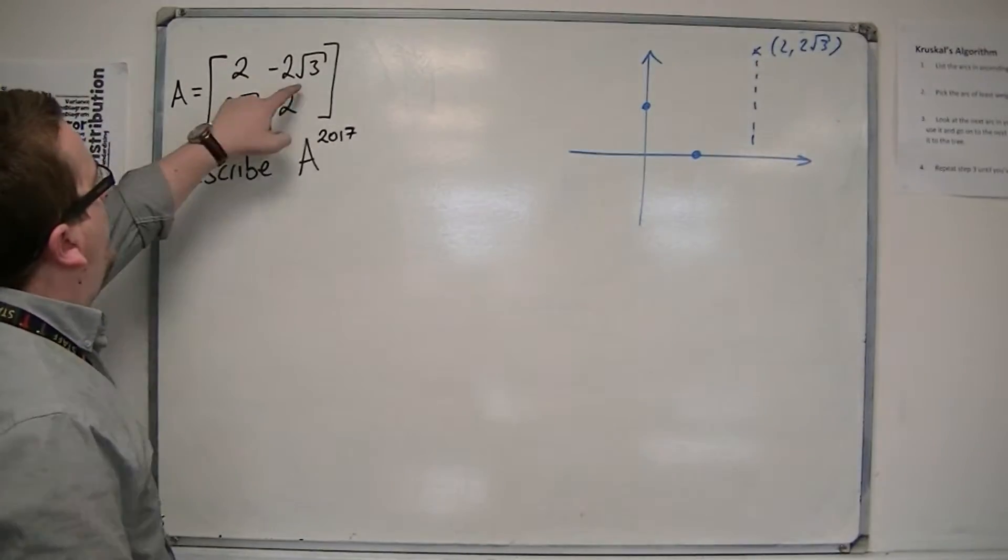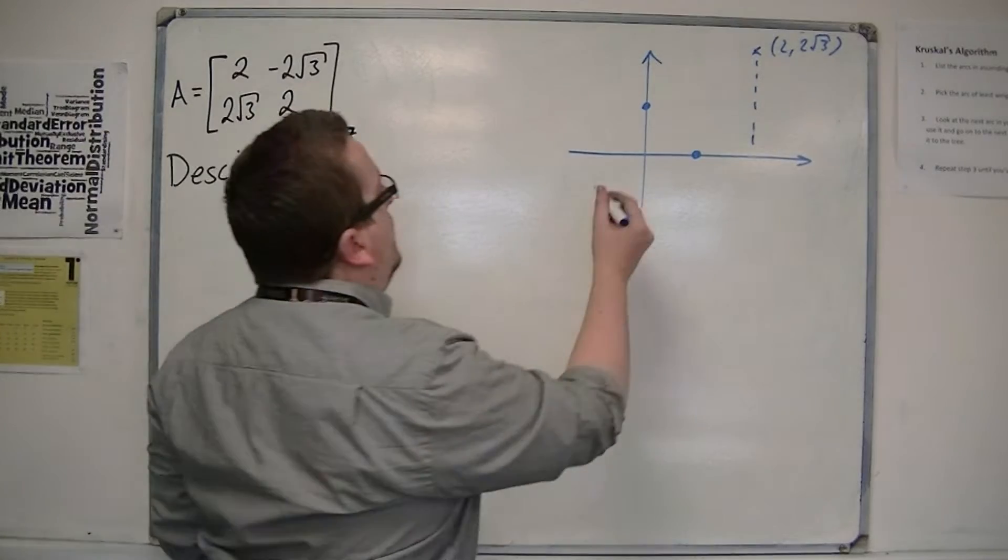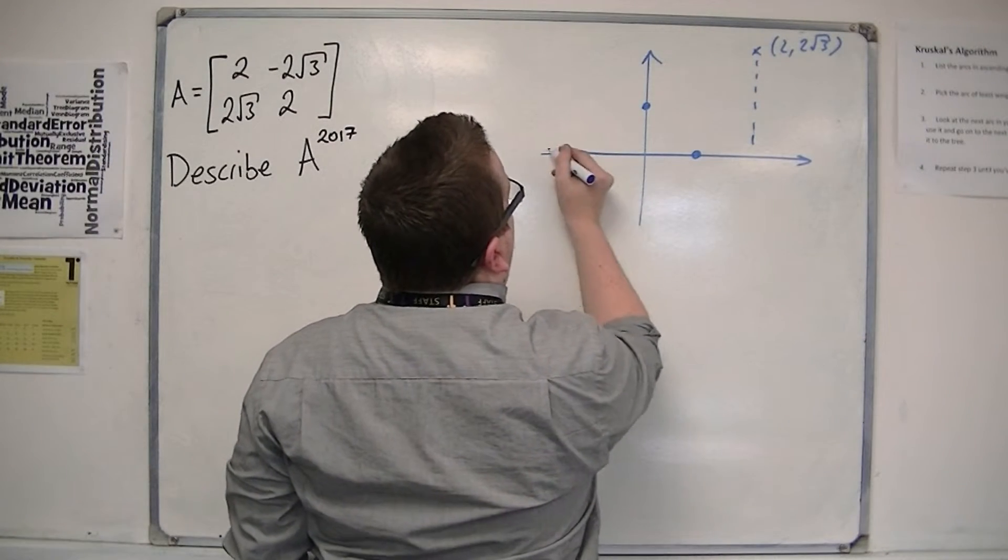And then you've also got this 0, 1 going to minus 2 root 3, 2, which is somewhere over here.